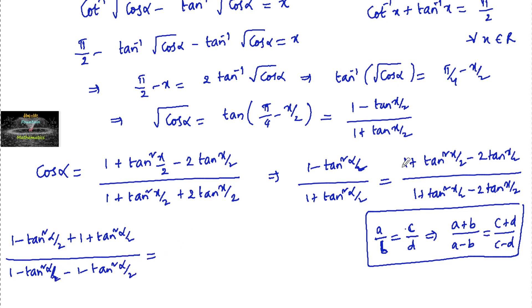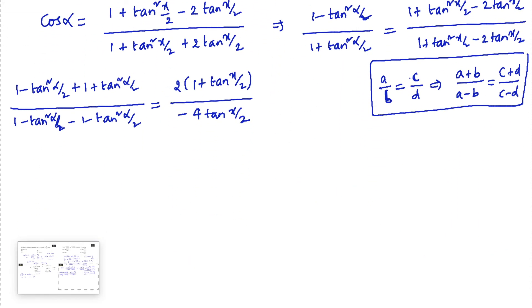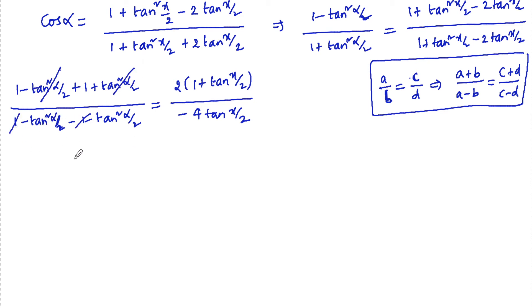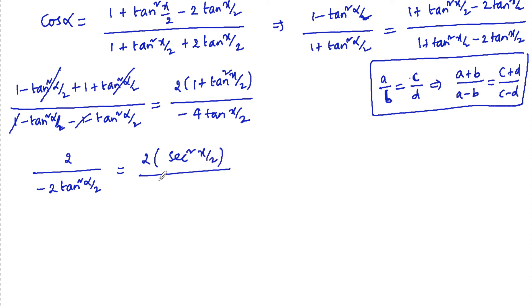Adding the numerator terms gives 2, and the tan²(α/2) terms cancel. In the denominator, the 1s cancel leaving minus 2·tan²(α/2). On the right side, adding gives 2·(1 + tan²(x/2)), which equals 2·sec²(x/2), divided by minus 4·tan(x/2).